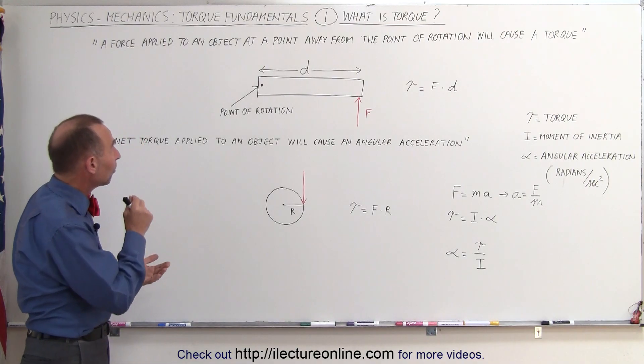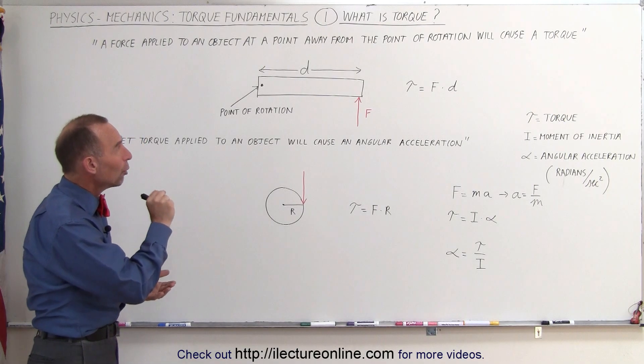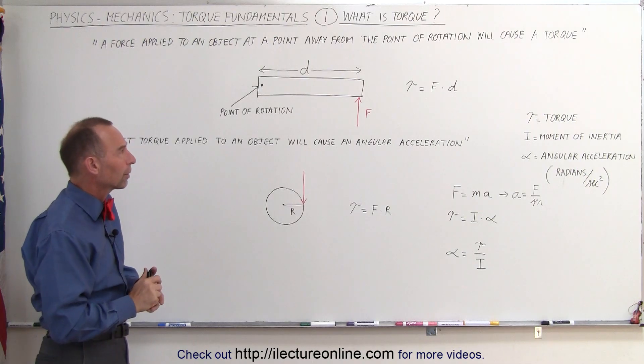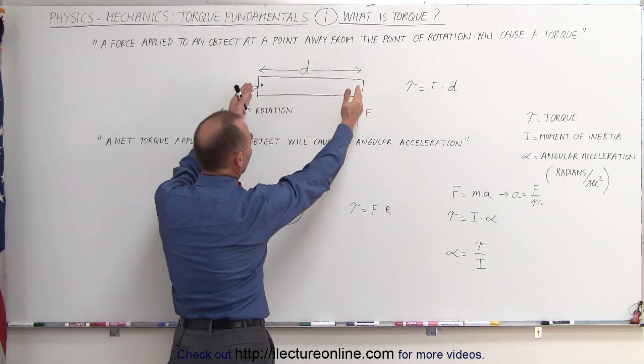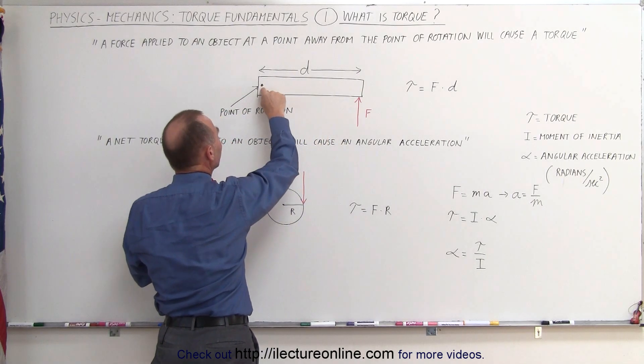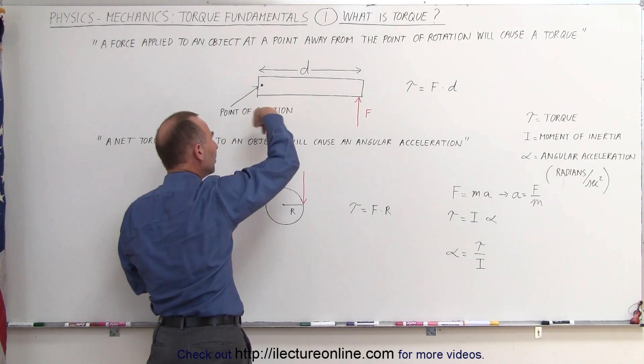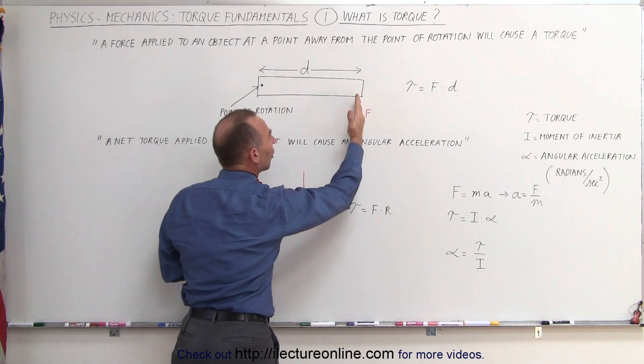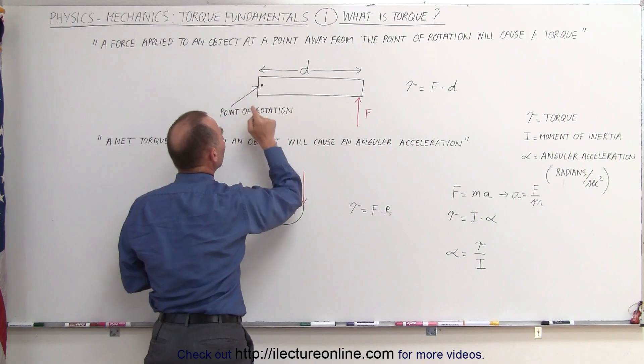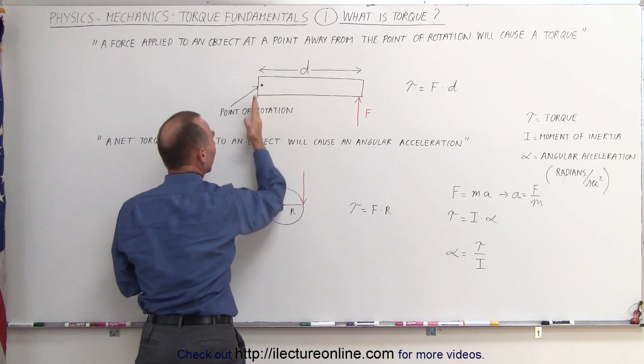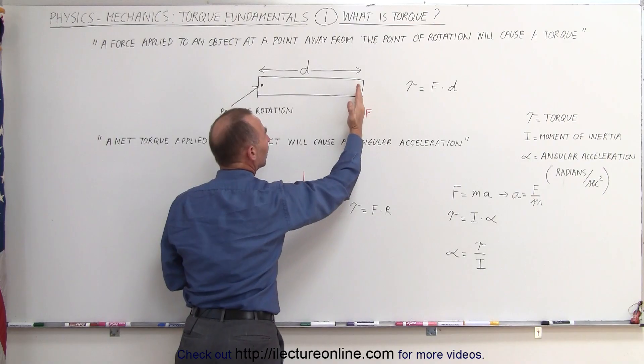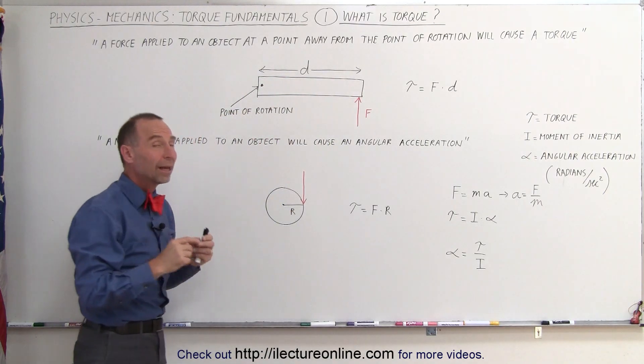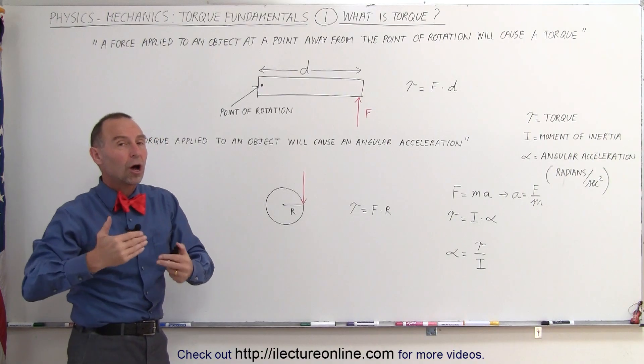Well, torque is a force applied to an object at a point away from the point of rotation and that will then cause the torque. In other words, if you have an object like this, like a board, a piece of wood that is maybe nailed down to the wall so that the piece of wood can rotate in any direction, and you apply a force away from the point of rotation, some distance d away from where it can rotate, well that means that that will indeed cause a torque.